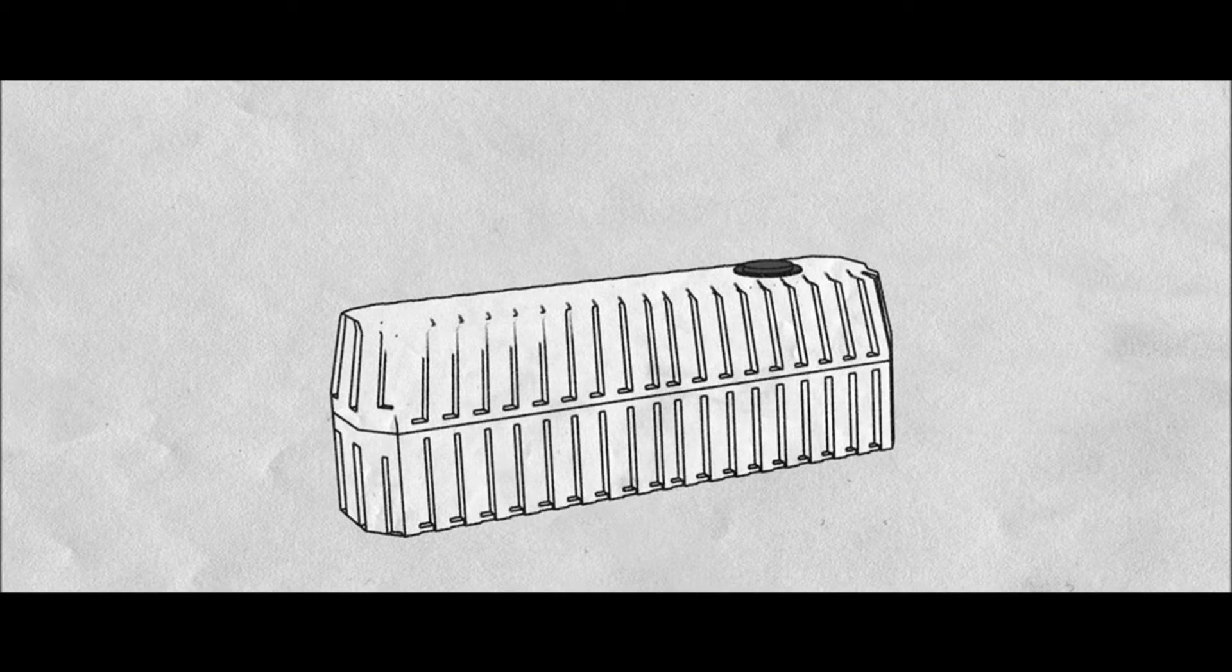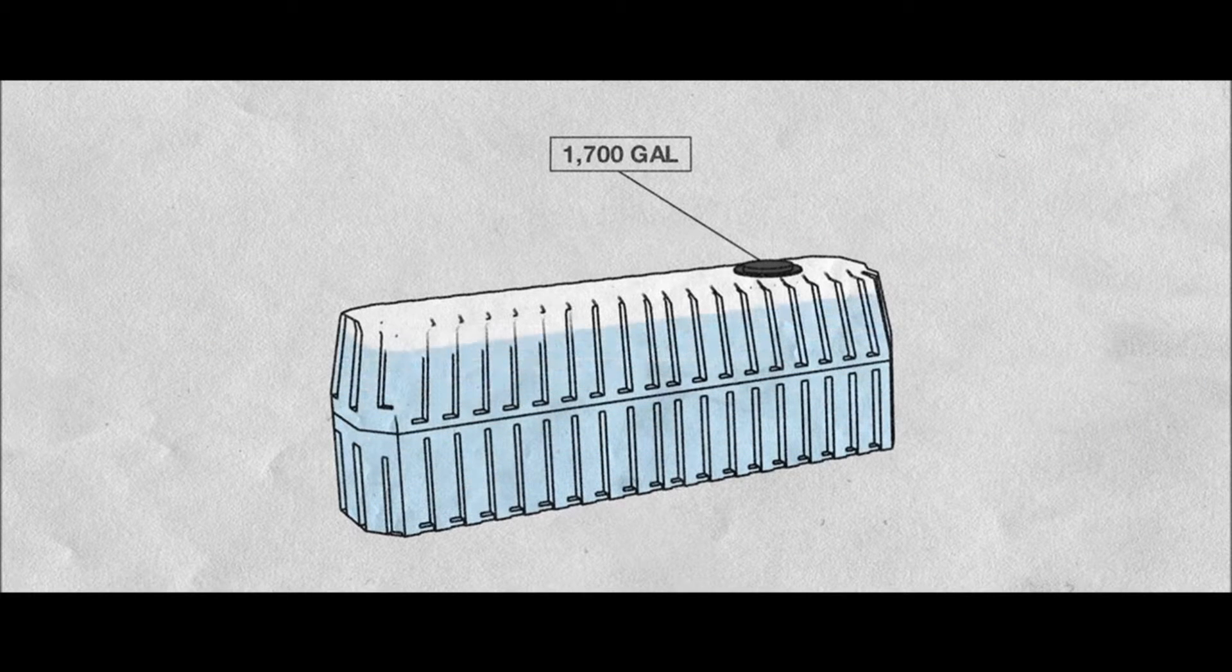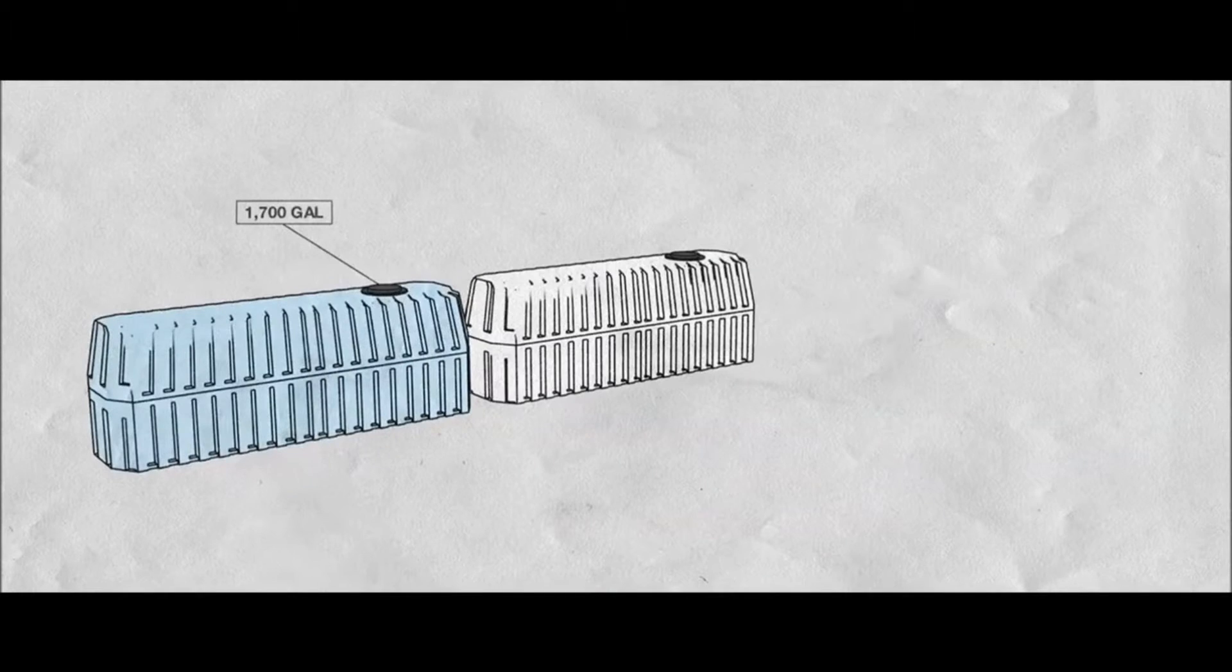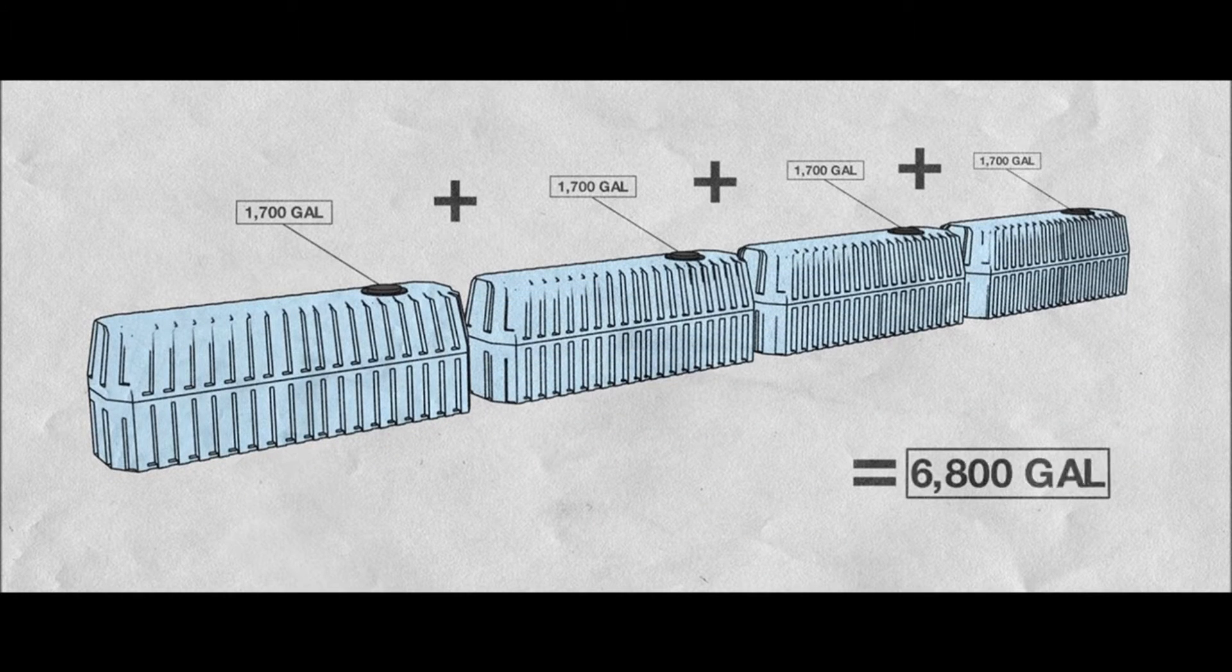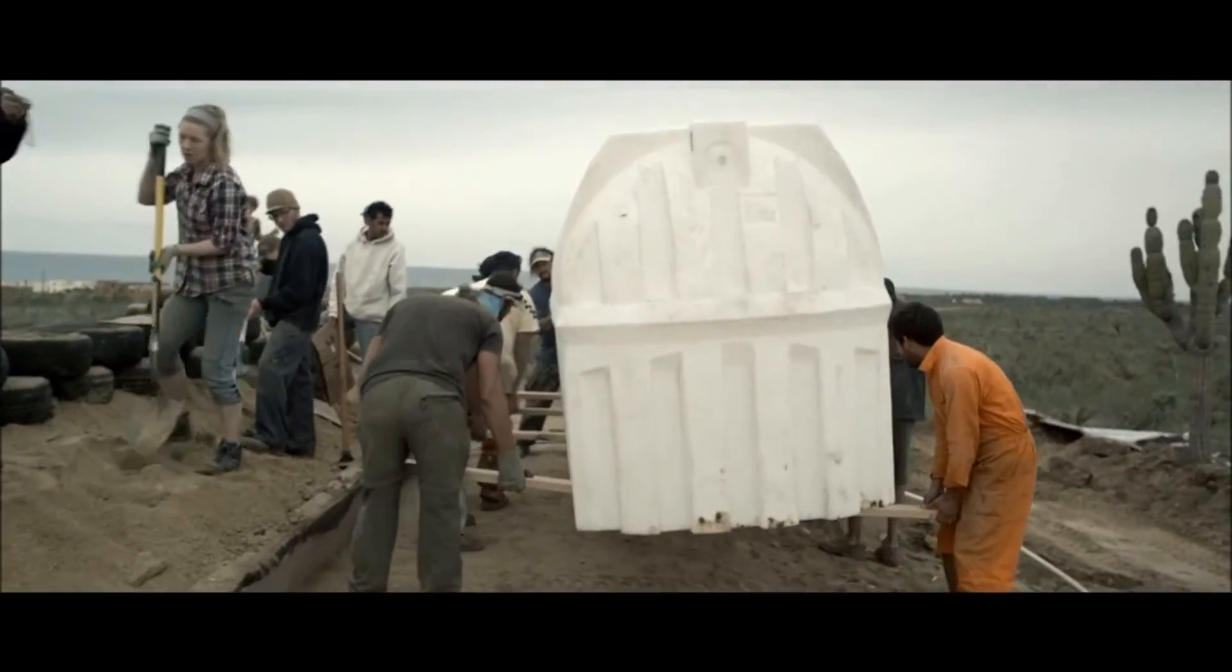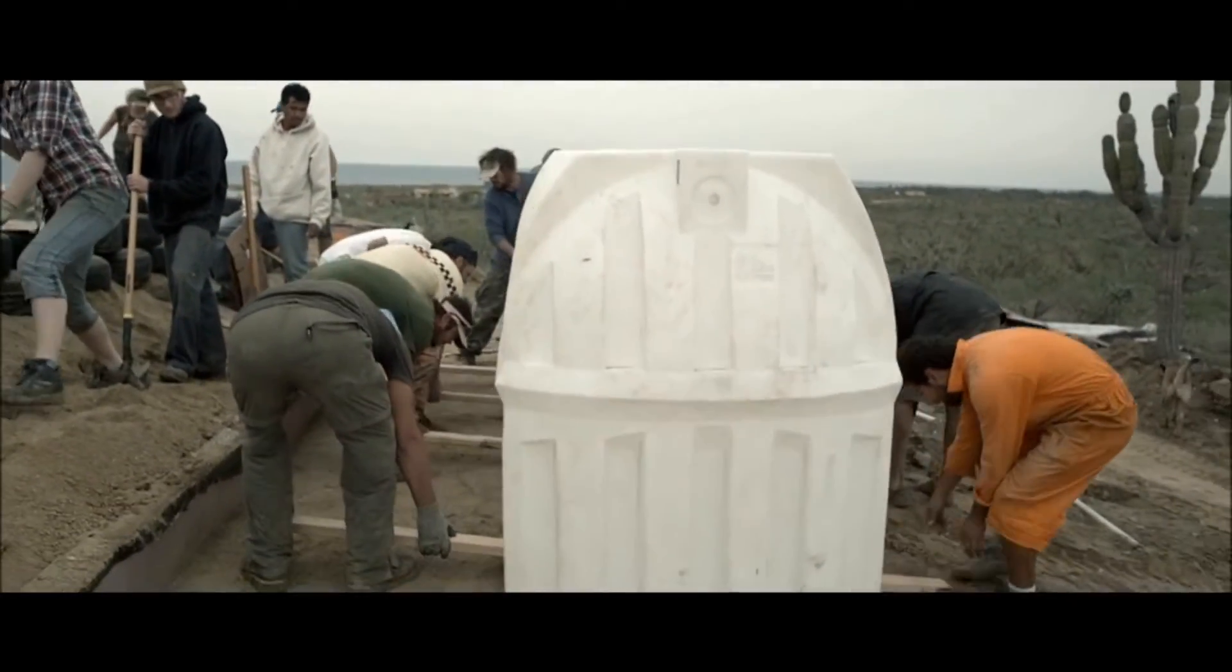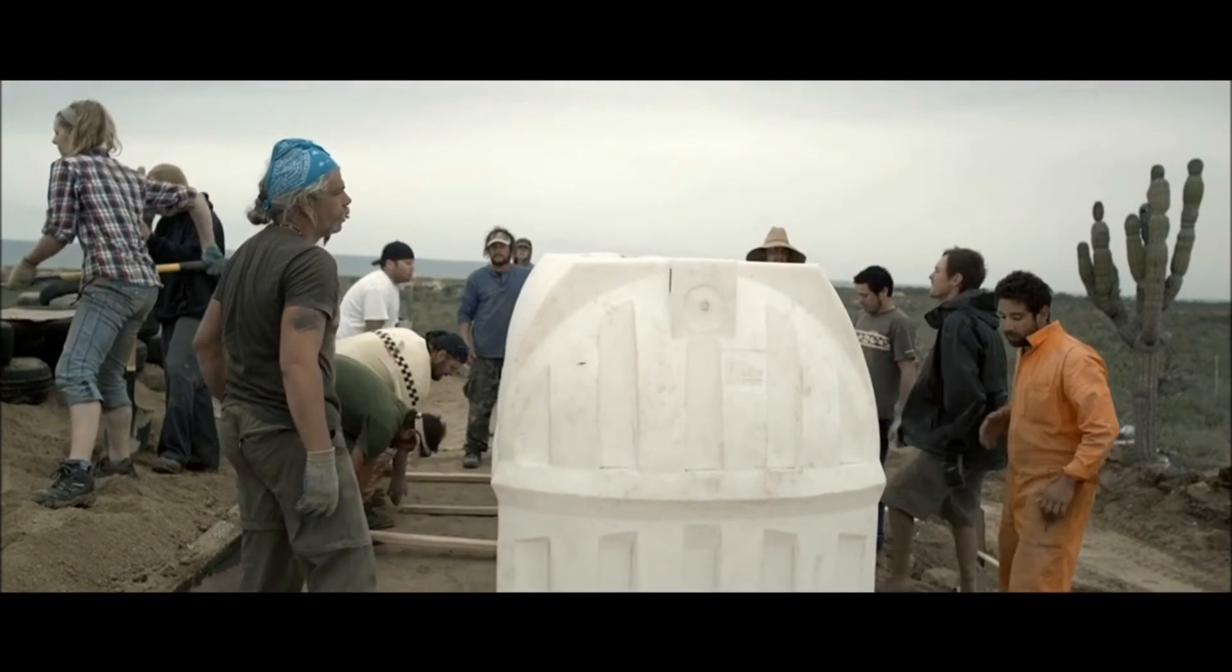This cistern can hold 1,700 gallons of water. There are three more on their way, so the total amount of water held will be 6,800 gallons. This particular one is made out of plastic, which is durable and resistant to rust and chemicals.